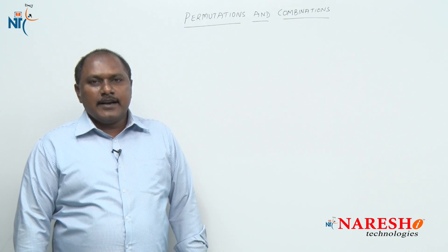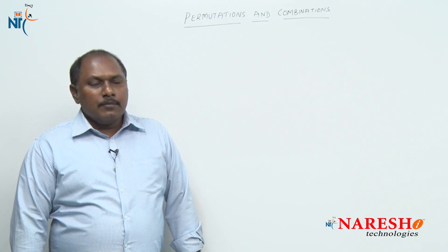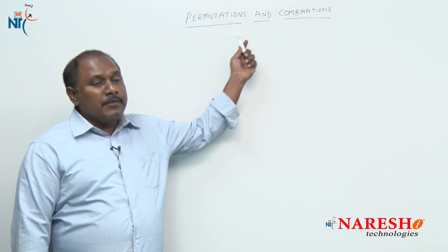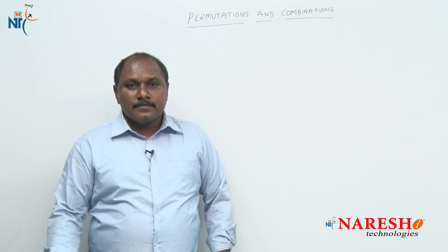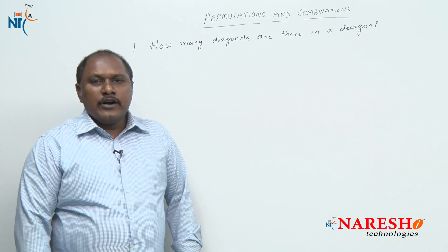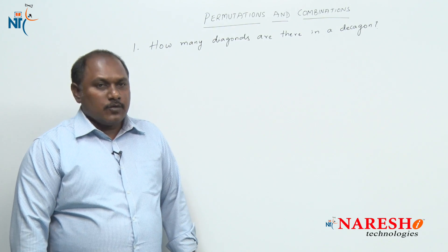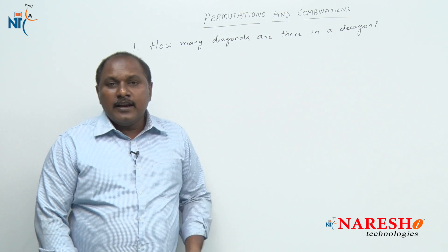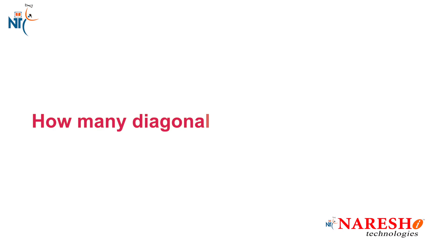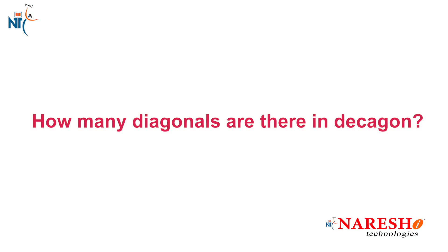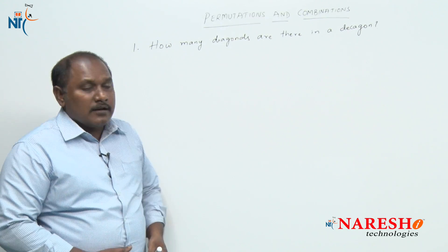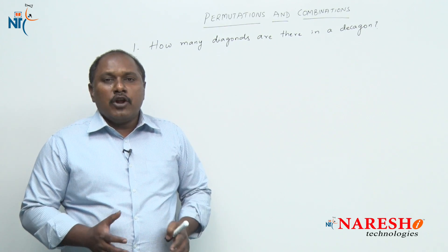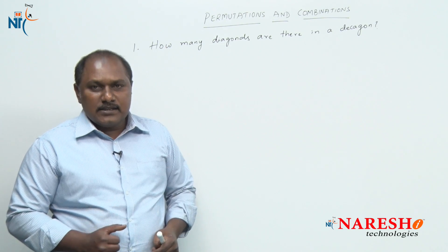Hi friends, welcome to Narayshai Technologies. Welcome to the fourth session on permutations and combinations. Let us look into the first question: How many diagonals are there in a decagon? A decagon is a polygon with ten sides.